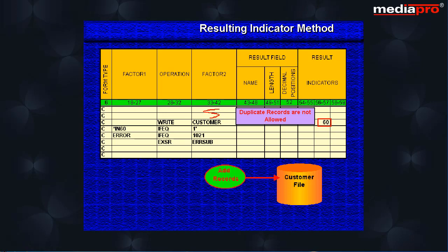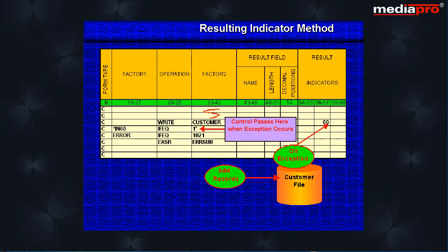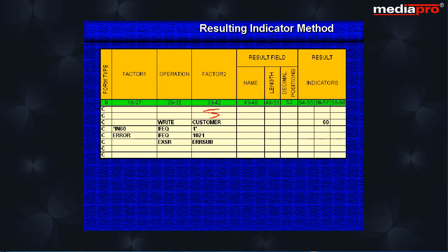An indicator is used in columns 56 and 57 that will be set on when an exception occurs. If an exception occurs, control passes automatically to the next line of code. Here we check the error field to see if it is a duplicate record — that is, an error code of 1021. In the case of duplicate records, we execute a subroutine that will inform the user of the error so that he can re-enter the record.